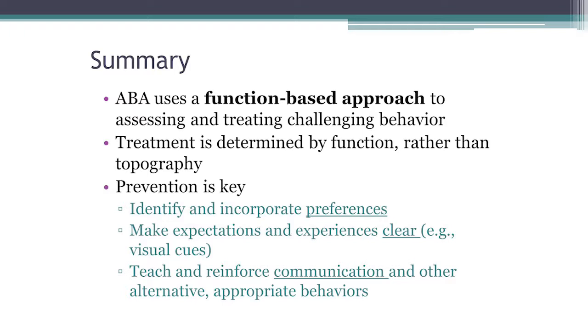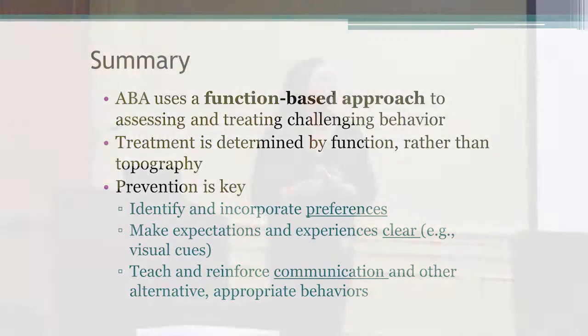ABA is a function-based approach. Finding the function is very important to provide a good intervention. We always determine treatment by function rather than what the behavior looks like — we're not focused on what it looks like, we're focused on why it's occurring and what is maintaining that behavior. And prevention is key. We do want to identify and incorporate preferences. With Michael, we needed to find his preferences so we could see what we needed to teach him to communicate for, and what he was willing to work for, to increase appropriate behavior in the future.